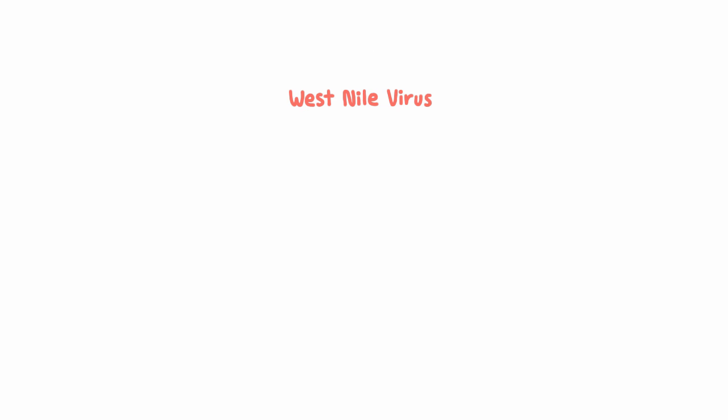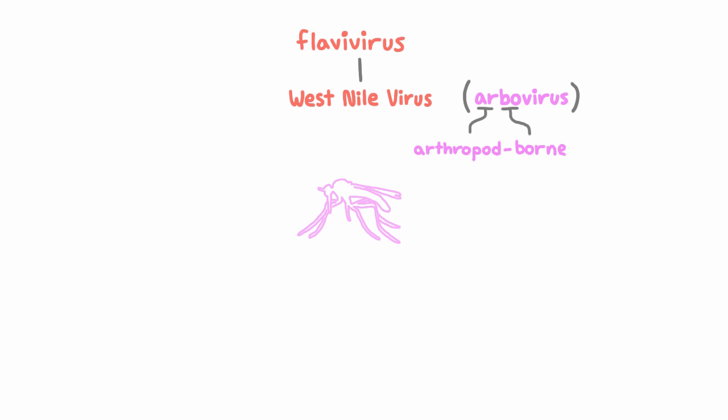West Nile virus is an arbovirus in the flavivirus genus, and the flavivirus genus actually contains a number of viruses that cause encephalitis, but we're just going to focus on West Nile for now. Arbovirus means it's arthropod-borne.